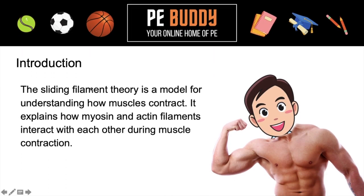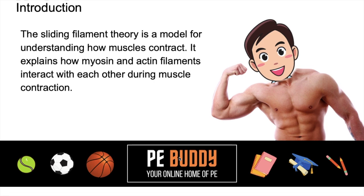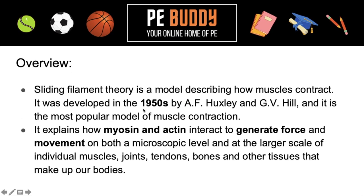So a bit of an introduction. The sliding filament theory is a model for understanding how muscles contract. It explains how myosin and actin filaments — these are the key components of this theory — work together during a muscle contraction. This theory has actually been around since the 1950s, so it's over 70 years old, developed by A.F. Huxley and G.V. Hill. It is the most popular model for explaining how myosin and actin filaments work together to generate force and movement. This happens both at a microscopic level and a larger scale.